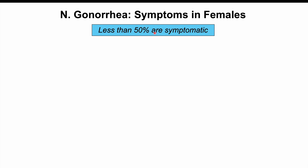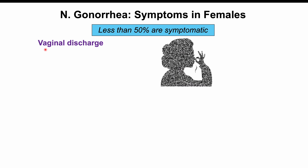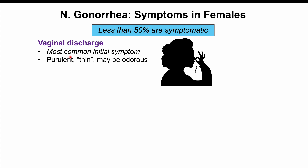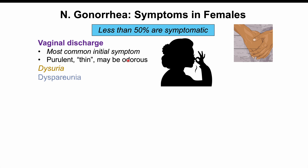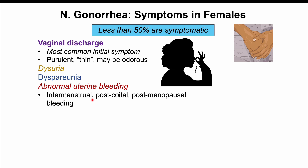In females, symptoms occur in less than 50% of patients. The most common initial symptom is purulent vaginal discharge, which can be thin and odorous. Other symptoms include dysuria, dyspareunia (painful intercourse), and abnormal uterine bleeding — including intermenstrual bleeding, post-coital bleeding, and post-menopausal bleeding.